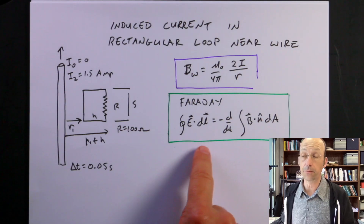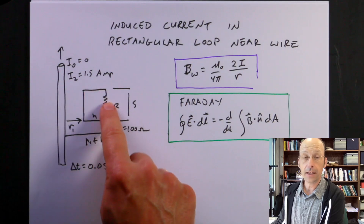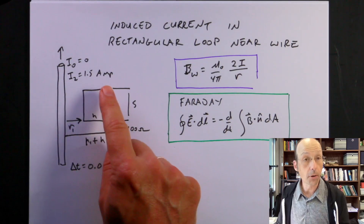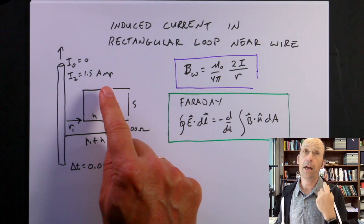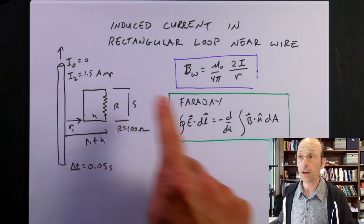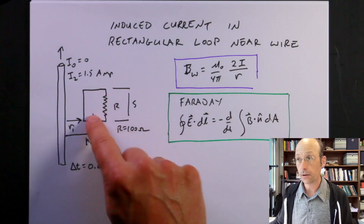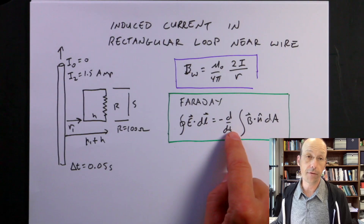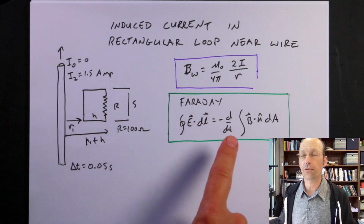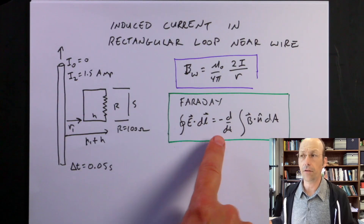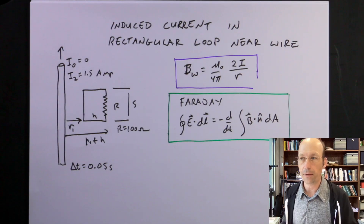The second idea is Faraday's Law. This says that if I take this loop and integrate E·dl around it, normally that would be zero — the change of potential would be zero around the loop. But this is not true if I have a changing magnetic flux. That's the time derivative of the magnetic flux through the area.